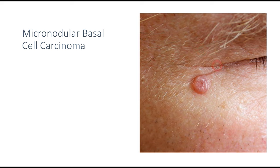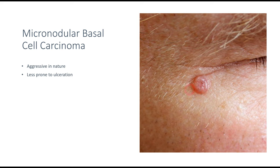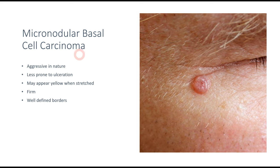In this clinical picture you can appreciate a nodule, which on biopsy turns out to be micronodular basal cell carcinoma. This is an important and aggressive subtype compared to others. This lesion is quite rare to ulcerate. When the skin is stretched, it appears yellow in color, and on palpation it feels firm. The borders are quite well defined — that is one of the important features of micronodular basal cell carcinoma.